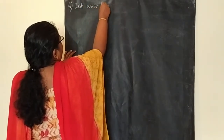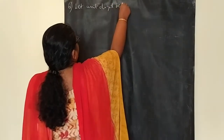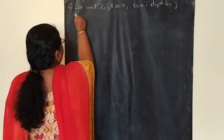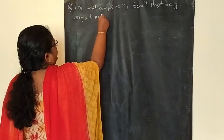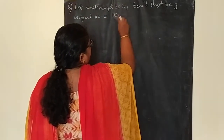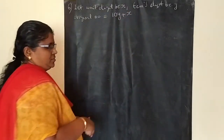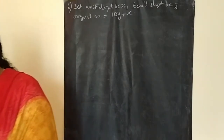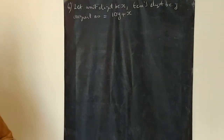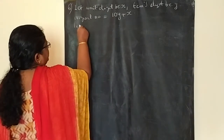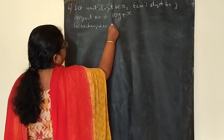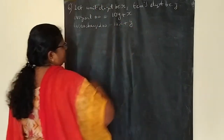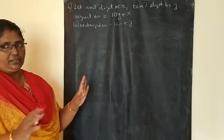Let us take unit digit as X and tens digit as Y. Now, you have to write the original number. The original number is 10 into tens digit, that is 10Y plus X. Since the interchanged word is there, you have to write the interchanged number as well. Tens become units and units become tens. So, the interchanged number is 10X plus Y.